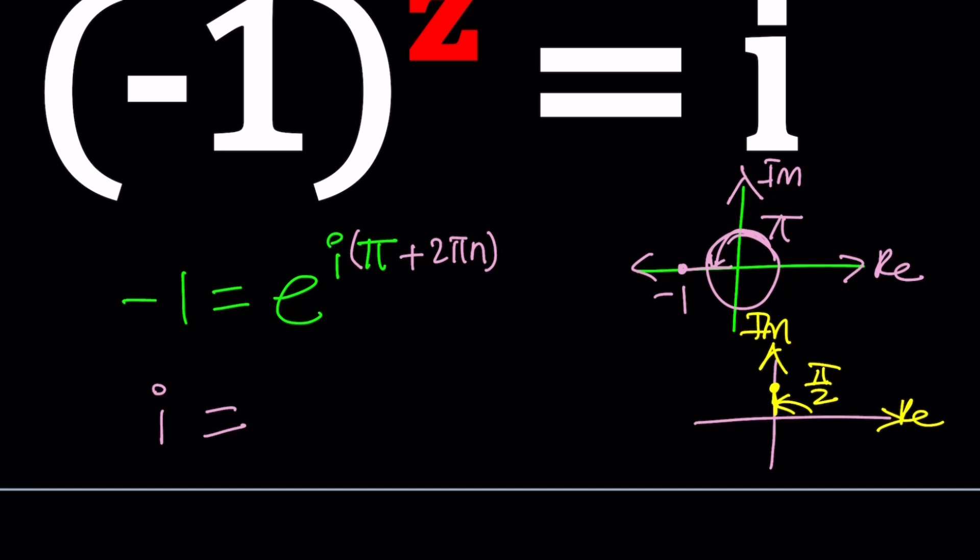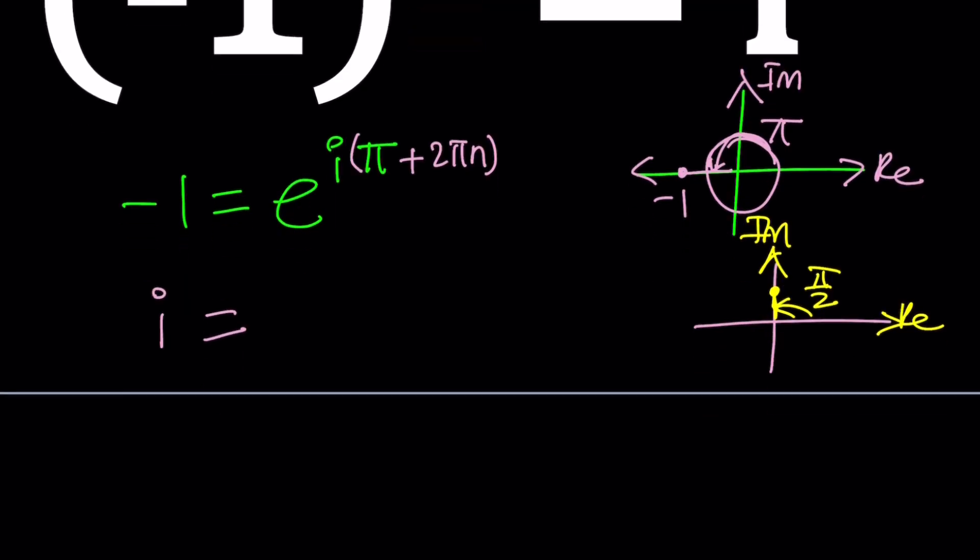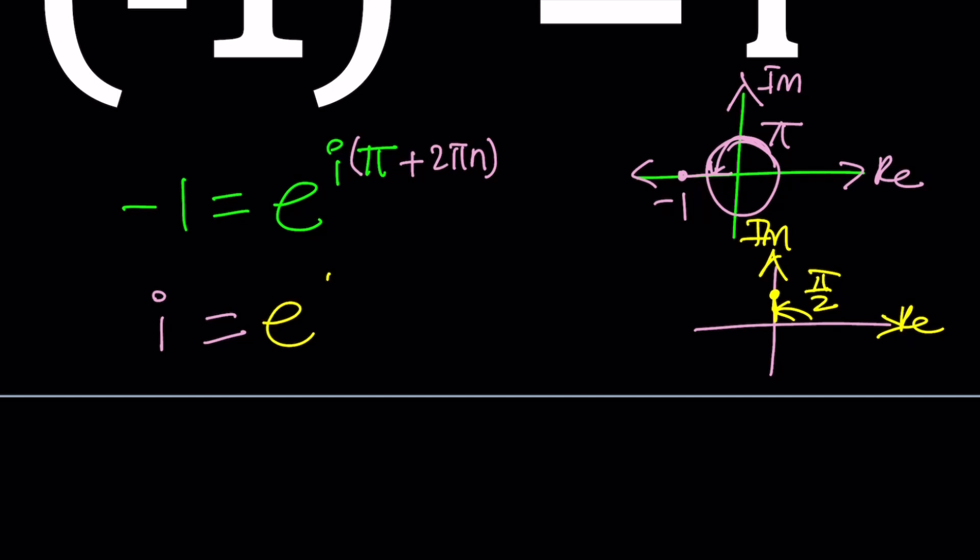Hopefully you're going to see that soon and I will announce it as well. So i can be written as e to the power i times pi over 2, but again for the same reason we should be able to add multiples of 2 pi to this.